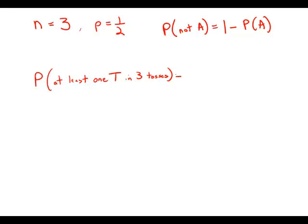So the probability of getting at least one tail in three tosses, well, what would it mean to get not at least one tail?